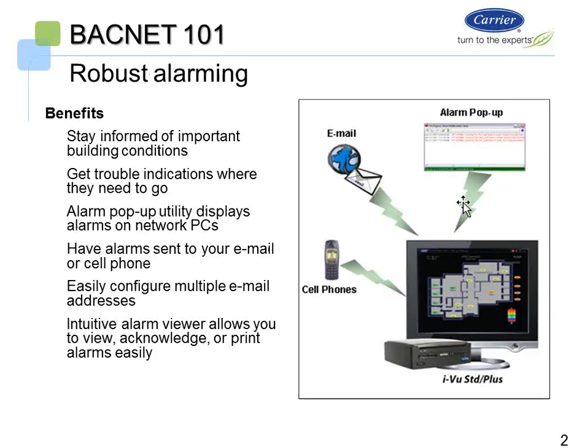Another huge feature is alarm capabilities. Email and text message alarming is huge nowadays — seeing a text message that your space is too hot or an email that your compressor failed are things building owners and engineers are looking for. The iView can send both emails and text messages to multiple people simultaneously, and you can choose which alarms you want sent. There's no limit, so it's a great feature.